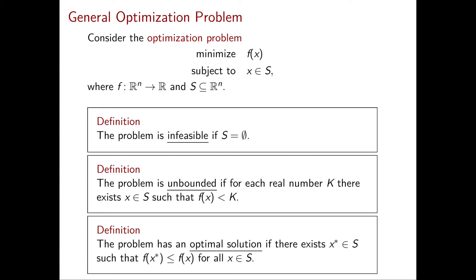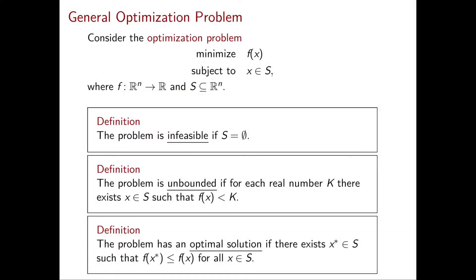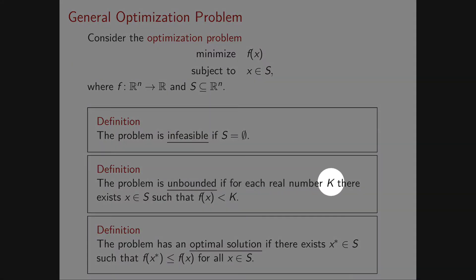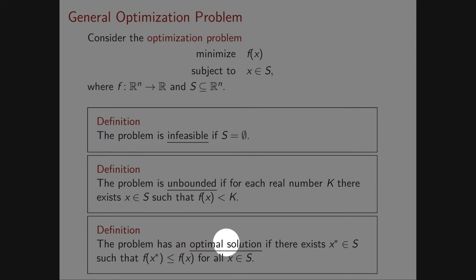I will give three definitions that we've already seen for linear programming problems, but here in a more general form. The first is infeasibility: the problem is infeasible if the feasible region is the empty set. Another outcome is that the problem is unbounded, meaning for every real number k there exists a feasible point such that f of x is strictly less than k. A third outcome is that the problem has an optimal solution: there exists a feasible x* such that f(x*) ≤ f(x) for all x in S.